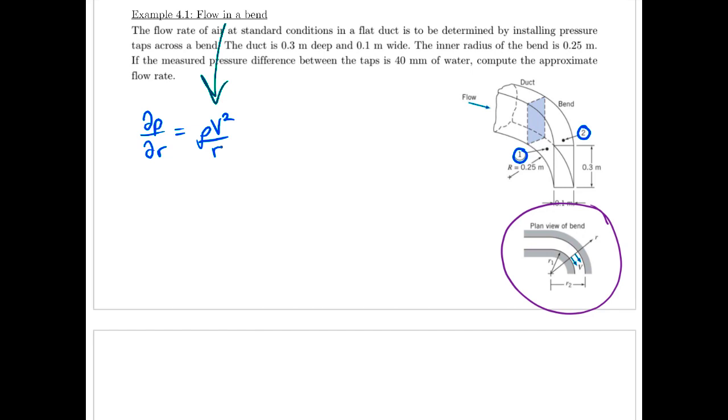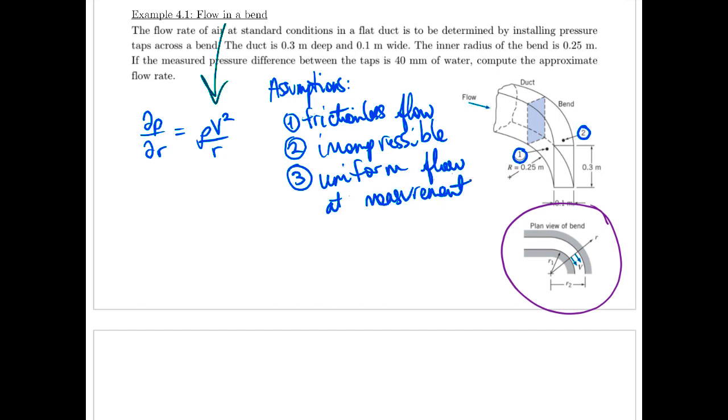Okay, so these are our assumptions. And we know that to use Euler's equation, we have to make a number of assumptions. So we'll assume frictionless flow, that it's incompressible, and that it's uniform flow at the point of measurement there. None of those are actually true. There are approximations we're making to be able to correlate these pressure values to a velocity.